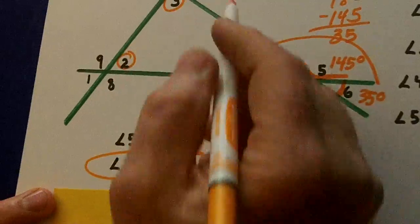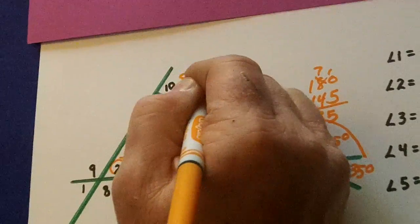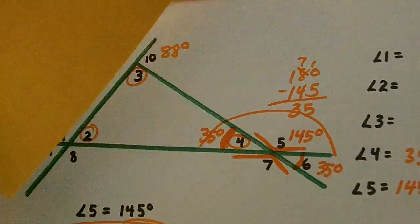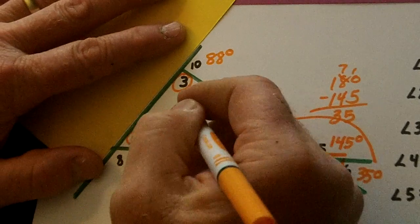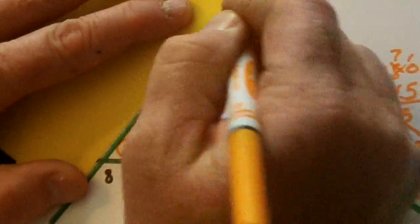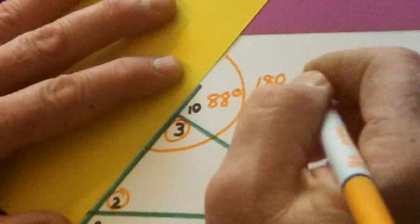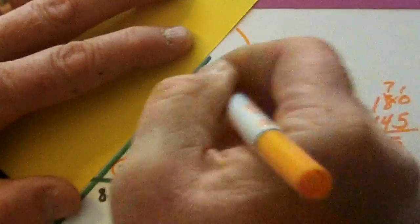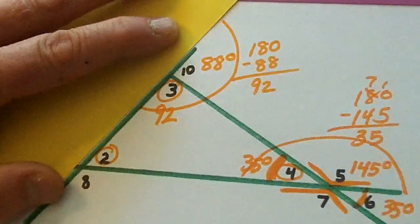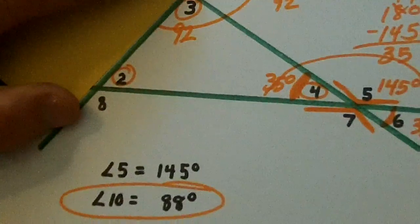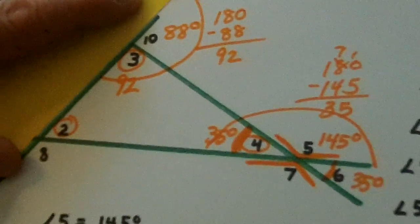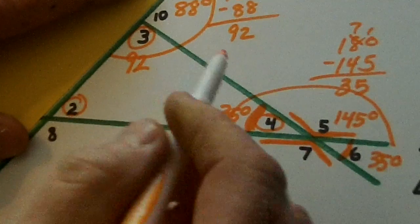Our other given is number 10 is 88 degrees. Can you see how we're going to do supplementary? Here we go. 180 minus 88. When you do all the borrowing, number three is 92. Number three is 92. After 10 was 88. Now watch this.